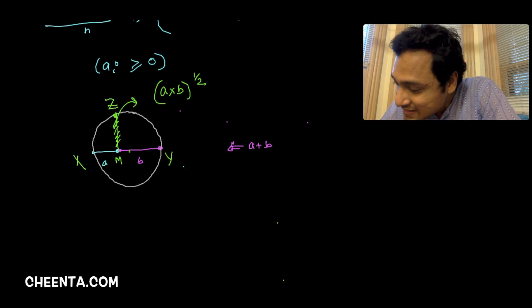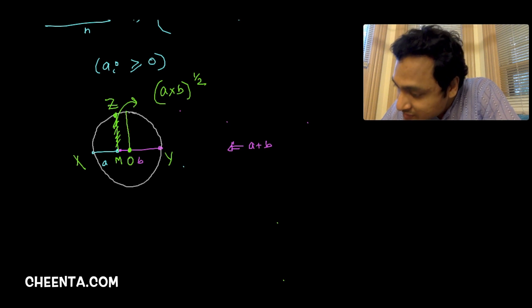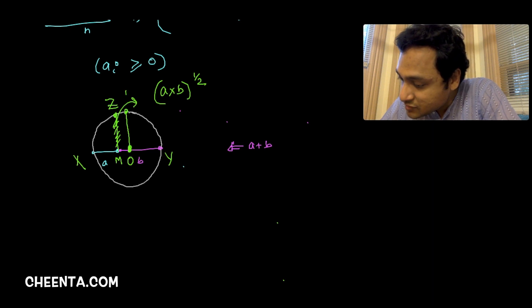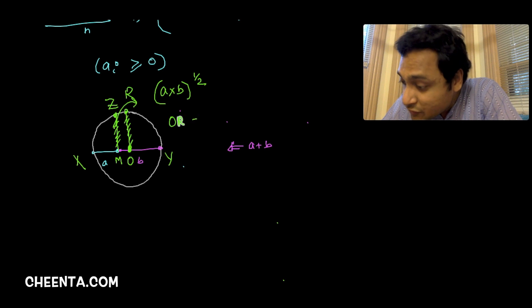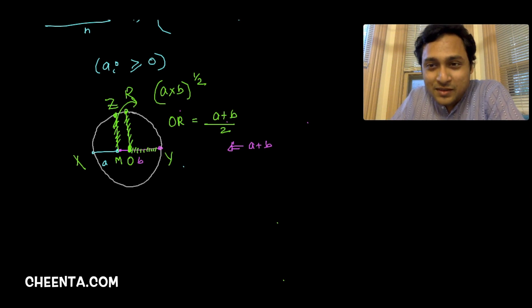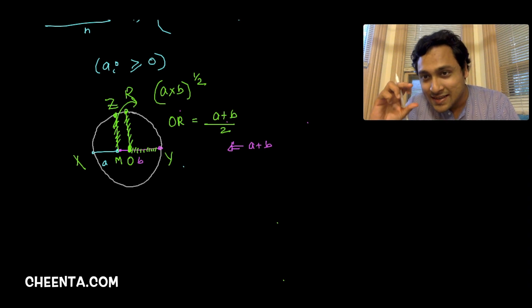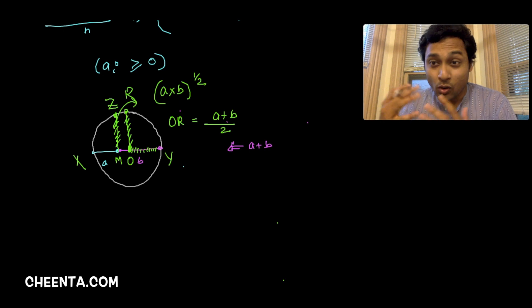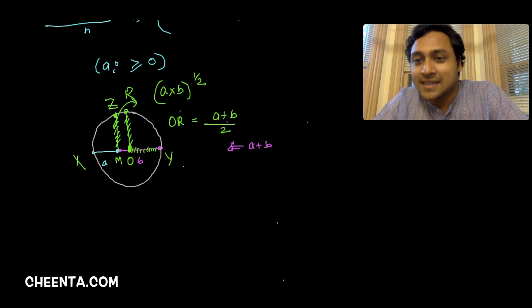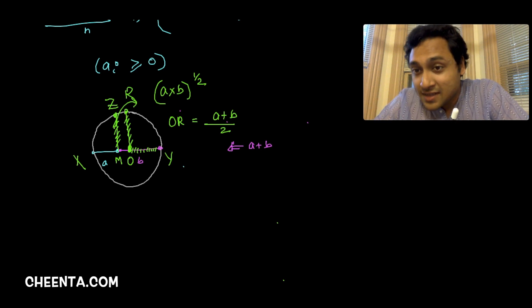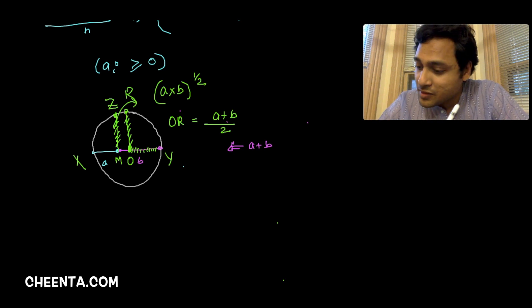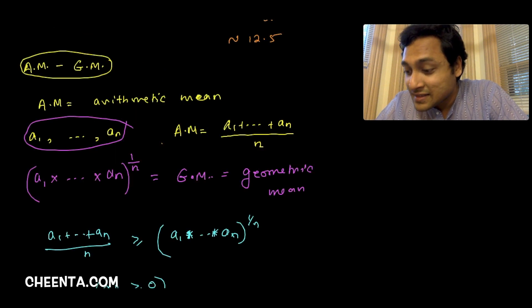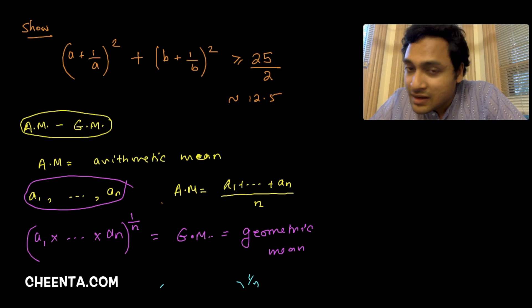If the center is O and the radius OR has length (a+b)/2, then the radius is the longest half-chord — that is what AM-GM inequality is about in the geometric sense. This deserves a larger discussion, covered in our math olympiad/ISI entrance program. Coming back to our problem, we will use the AM-GM inequality, so let me go to a new board.